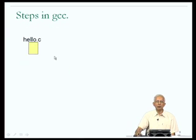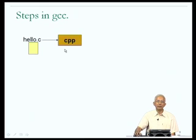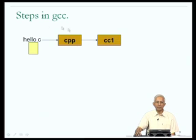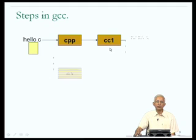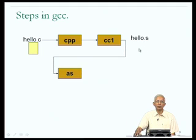Your program hello.c, which was written in C, is taken in as input by the first step in GCC, which is called CPP — the C preprocessor. Some form of translation is done on your C program. The next step is CC1, which once again does some transformation of your program. It generates a temporary file called hello.s, which is the input to the next step in the GCC translation, called AS.